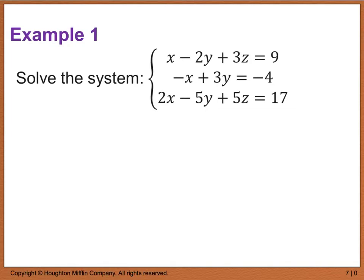We can do any number of what we call row operations. I can move rows around, multiply each row by a coefficient — whatever I need to do to get into row echelon form. My ultimate goal is to have a leading coefficient of 1 on x, a leading coefficient of 1 on y, and a leading coefficient of 1 on z, eliminating the other terms to get that stair-step notation.